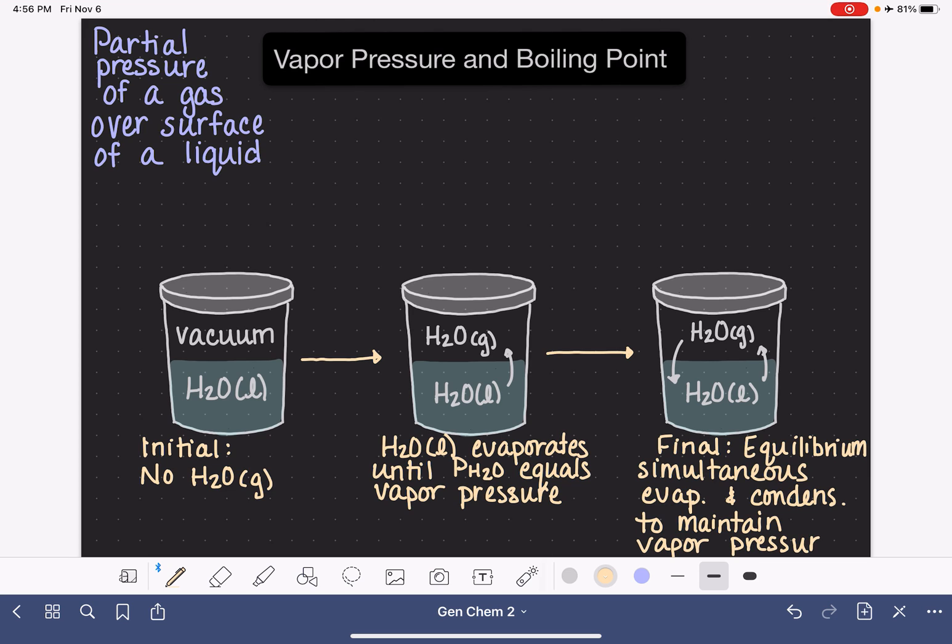Now as I said, vapor pressure is a number that depends not only on what type of molecule you're looking at, but it also depends on the temperature. As temperature gets higher, vapor pressure gets higher as well. So if this was in a warm environment, we would see that the vapor pressure would be much greater than if it were in a cold environment.